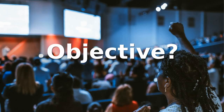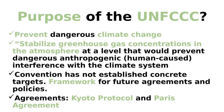So, what are the objectives of the UNFCCC? The UNFCCC has basically one big goal and that is to stop climate change. Or how they frame it: stabilization of greenhouse gas concentrations in the atmosphere at a level that would prevent dangerous anthropogenic interference with the climate system, within a timeframe that allows people and the planet to adapt and economies to develop sustainably. But what does this mean in detail? In fact, the convention itself has not established concrete targets. Rather, it was intended to provide a framework for future agreements and policies.